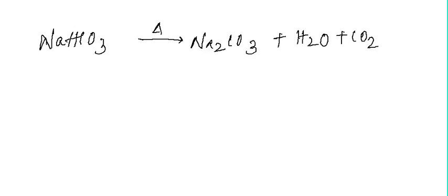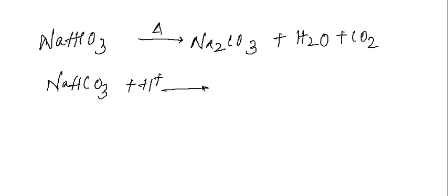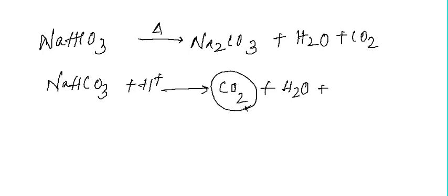Baking soda is also used for making baking powder, which is a mixture of baking soda (sodium hydrogen carbonate) and a mild edible acid such as tartaric acid. When baking powder is heated or mixed in water, NaHCO₃ reacts with the acid to produce CO₂ and water. Because of this CO₂, the cake becomes fluffy — the gas tries to escape the mixture, increasing the volume and making the cake soft.